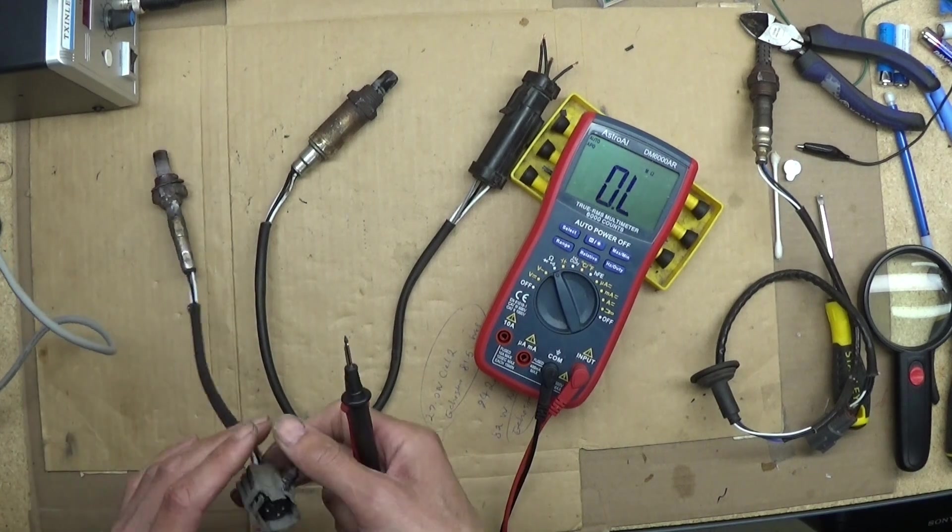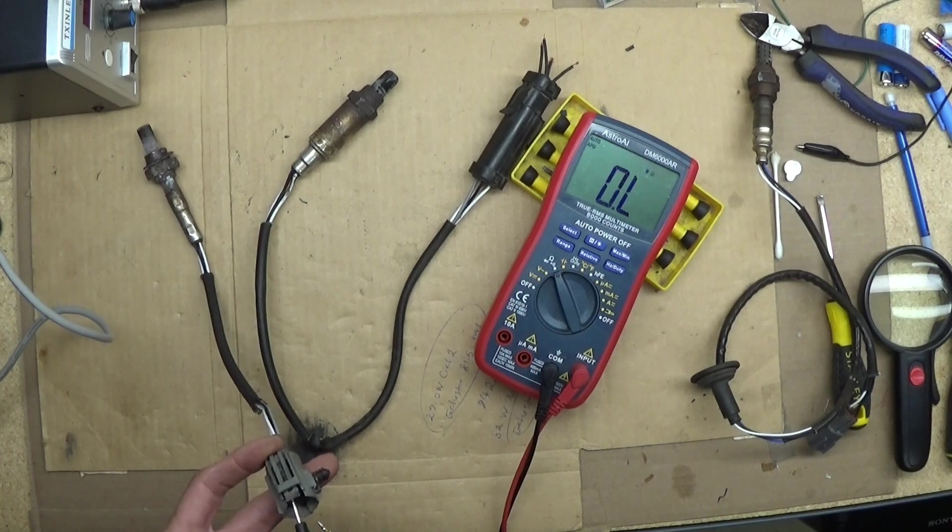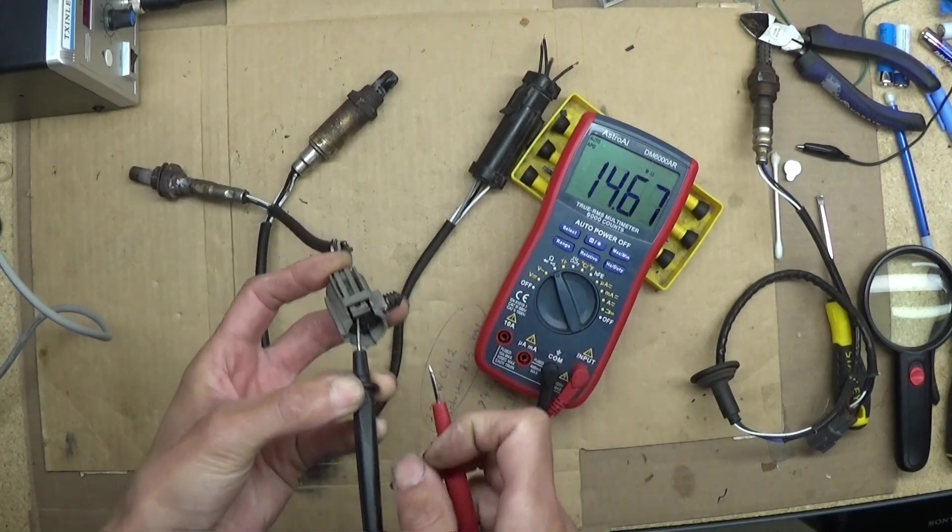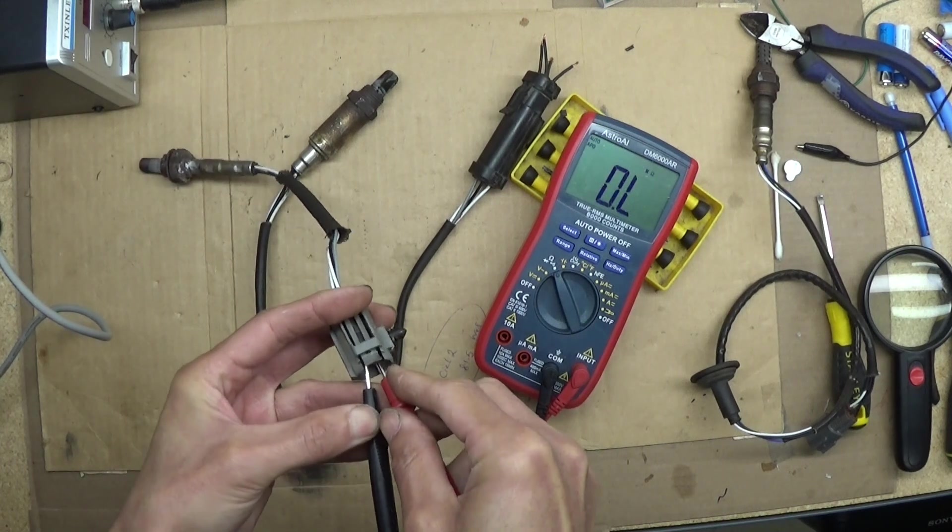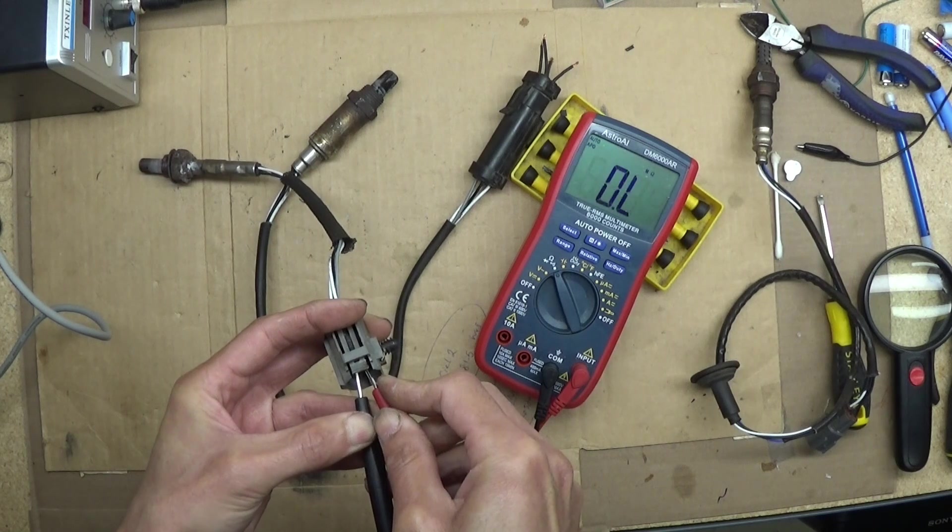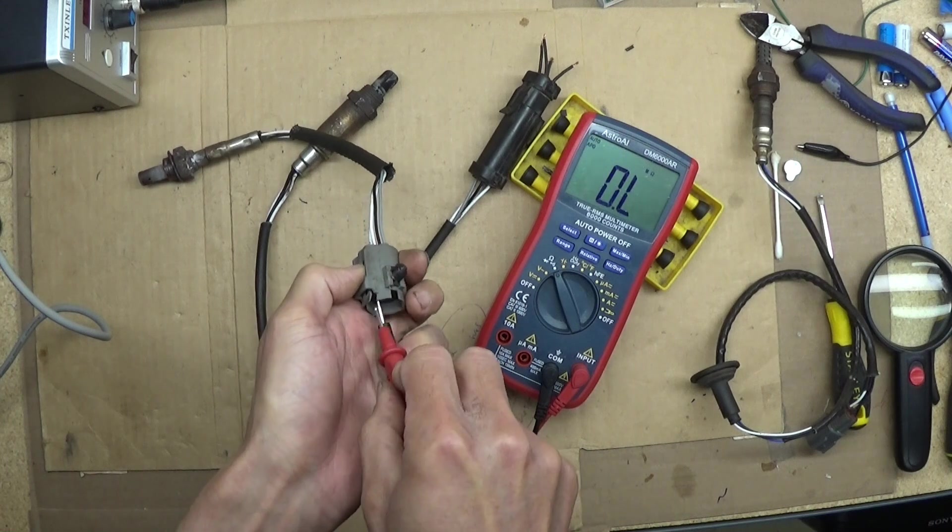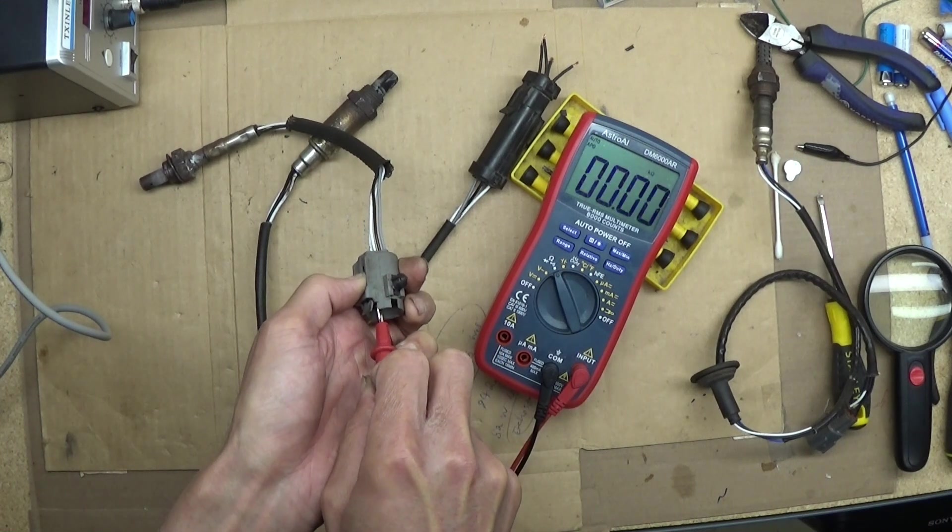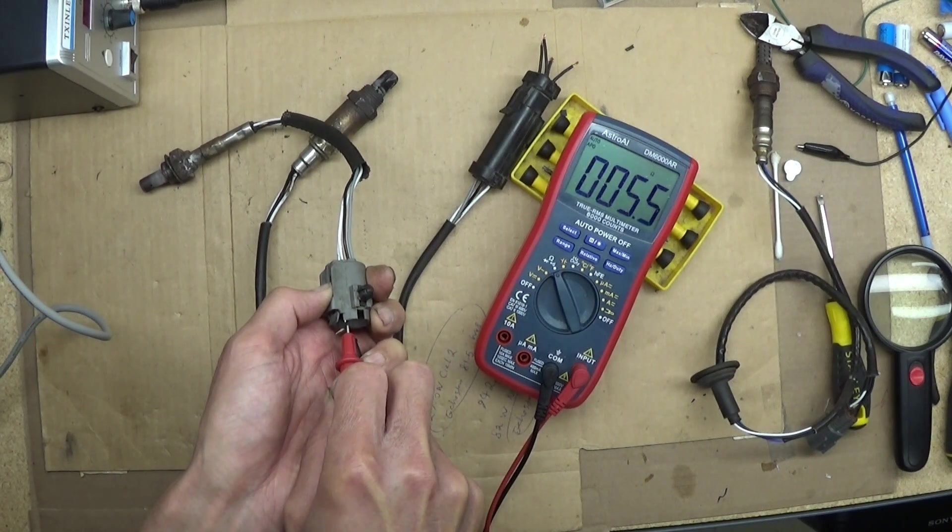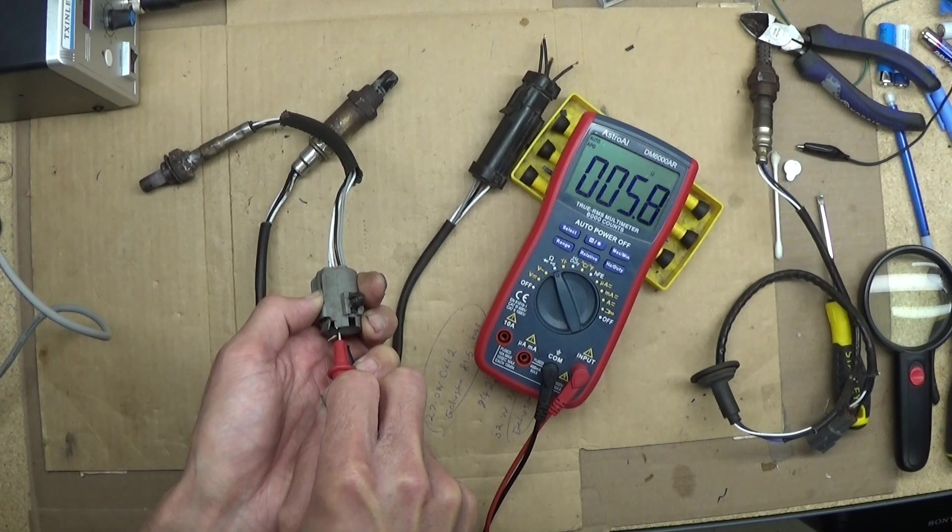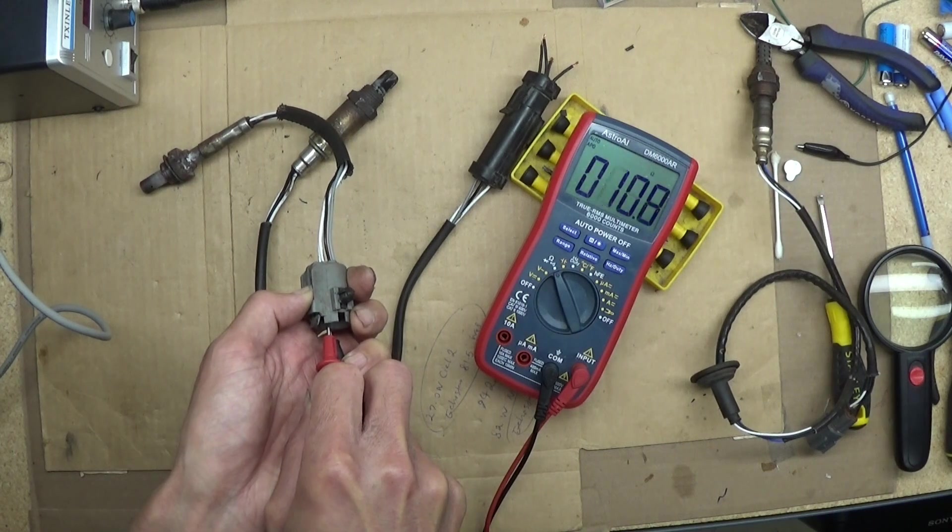Now, the second one from the 97 Dodge Dakota. The same—we can only use these two white wires for the heater wire. We'll see 5.5 ohms, the same as the previous one, almost. Just one ohm difference.